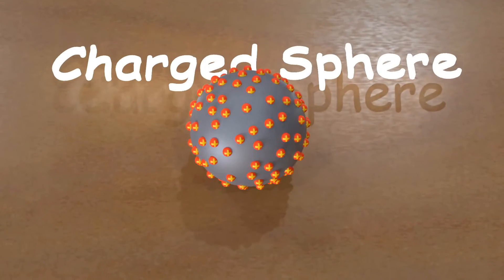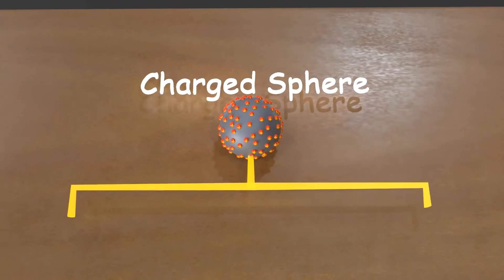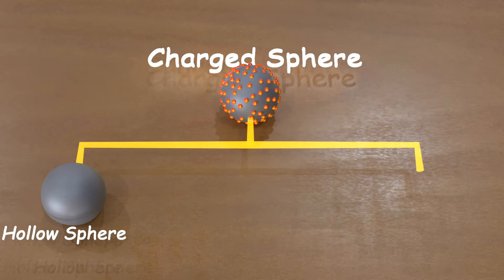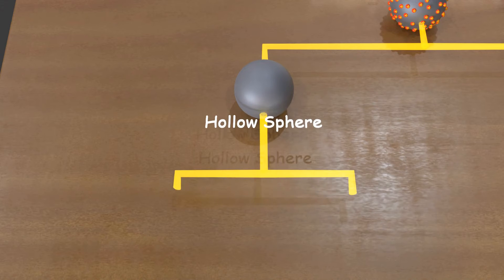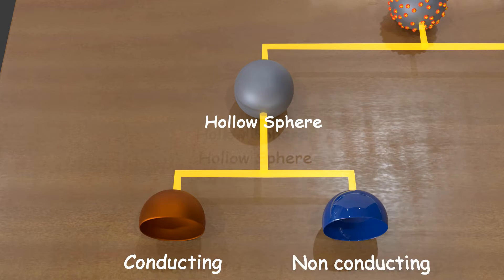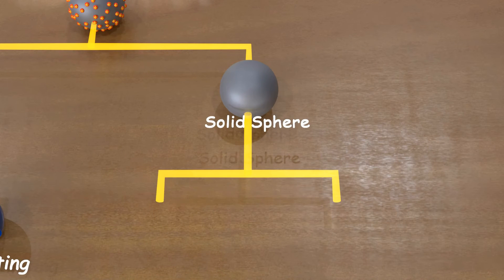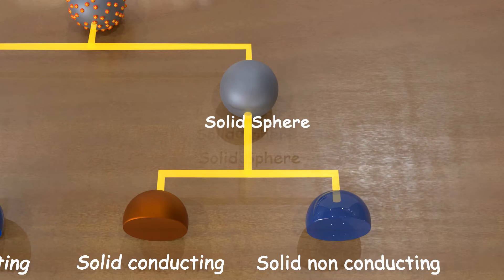Whenever we discuss charged spheres, we can categorize them into two types: the first being the hollow sphere and the second being the solid sphere. A charged hollow sphere can be metallic or conducting, or it can be non-metallic or non-conducting. Similarly, a solid charged sphere can be either conducting or non-conducting.